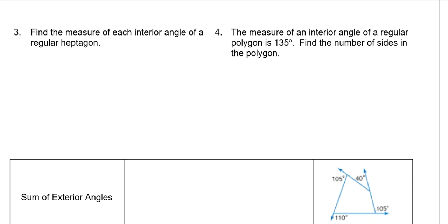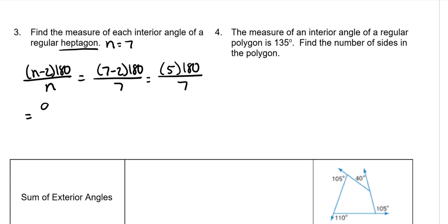Find the measure of each interior angle of a regular heptagon. A heptagon, n equals seven, because a heptagon is a seven-sided object. We have (n-2) times 180 divided by n, which means we do 7 minus 2 times 180 divided by 7. Seven minus two is five, five times 180 is 900. If you divide that, it's about 128.6 degrees. Anytime you deal with heptagons, you're going to have decimals for their angle measures because seven is a funky number.